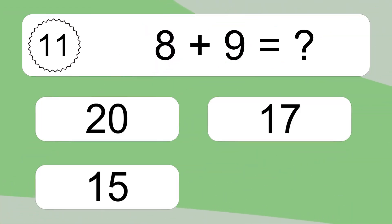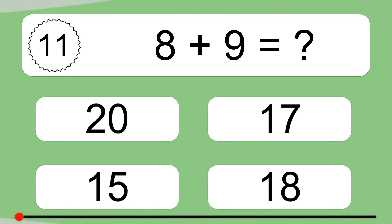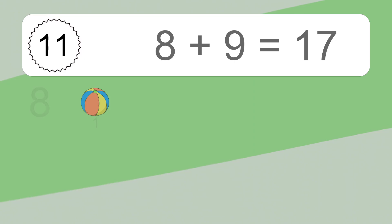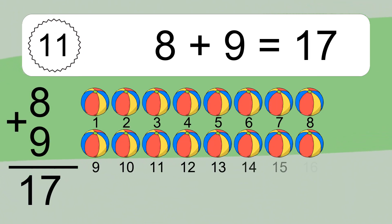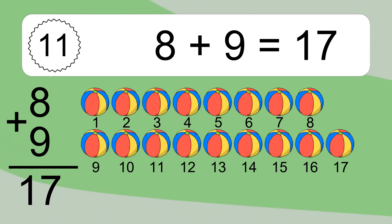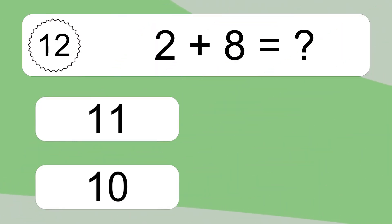8 plus 9 equals what? 8 plus 9 equals 17. Let's count it: 1, 2, 3, 4, 5, 6, 7, 8, 9, 10, 11, 12, 13, 14, 15, 16, 17.